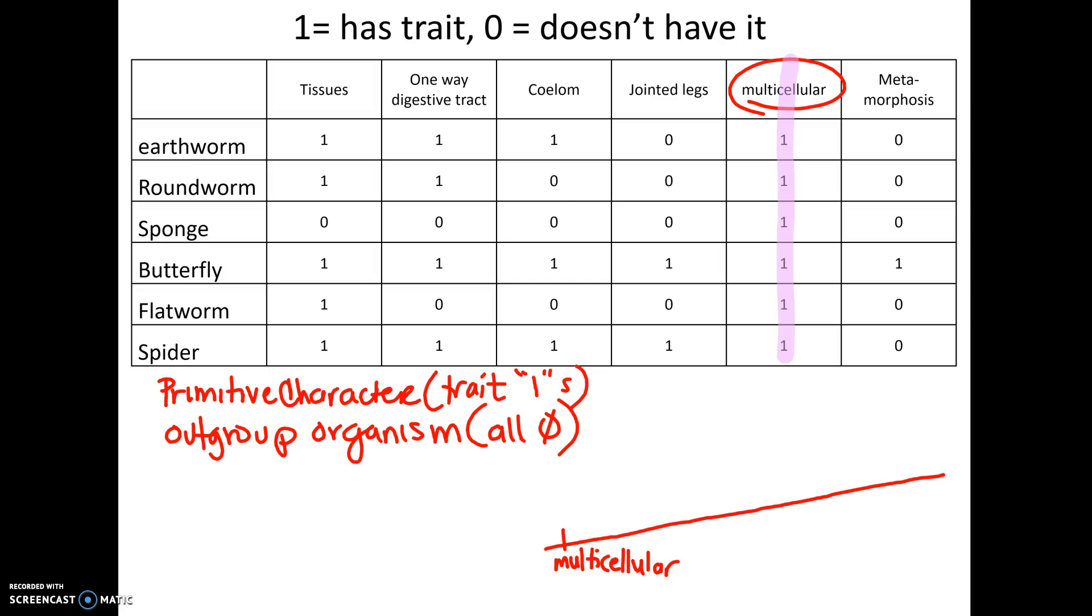But as long as it matches the matrix, the graph, you're good. Now, we cross off multicellular. Now, the way this is going to work is you're going to go back and forth. In other words, now that we've done a trait, we're going to look for an organism that now has all zeros past this point. Because that's going to be our most primitive organism. So we're always looking for organisms with the most zeros and then traits everybody has. So if I look through my organisms, I see that the sponge has all zeros once I cross off multicellular. So that's going to be my first organism here, the sponge.